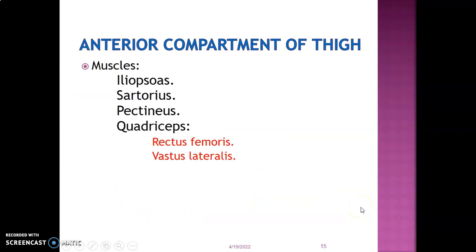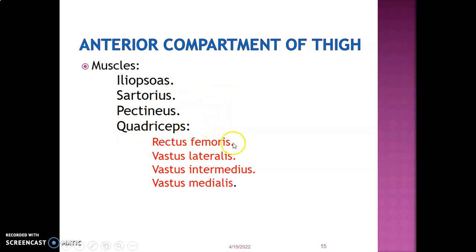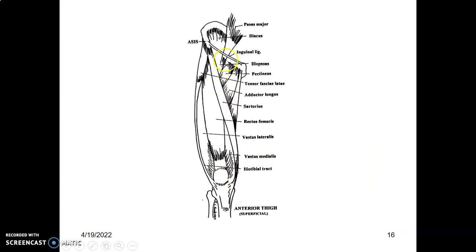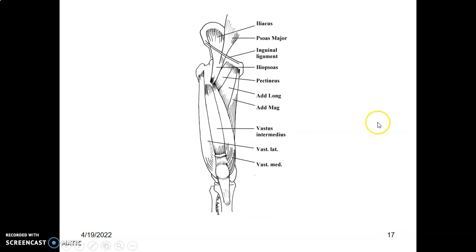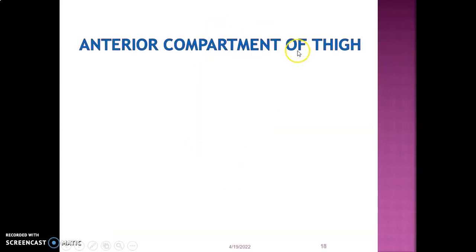The muscles in the anterior compartment of the thigh are: iliopsoas — the major flexor; sartorius — the tailor's muscle; pectineus; and the quadriceps, which is formed by four muscles: rectus femoris, vastus lateralis, vastus medialis, and vastus intermedius. Iliopsoas (iliacus and psoas together) inserts on the lesser trochanter of the femur. Pectineus, adductor longus, and sartorius are also visible here, along with the quadriceps femoris — rectus femoris, vastus medialis, vastus lateralis — and when rectus femoris is cut, you can appreciate vastus intermedius.